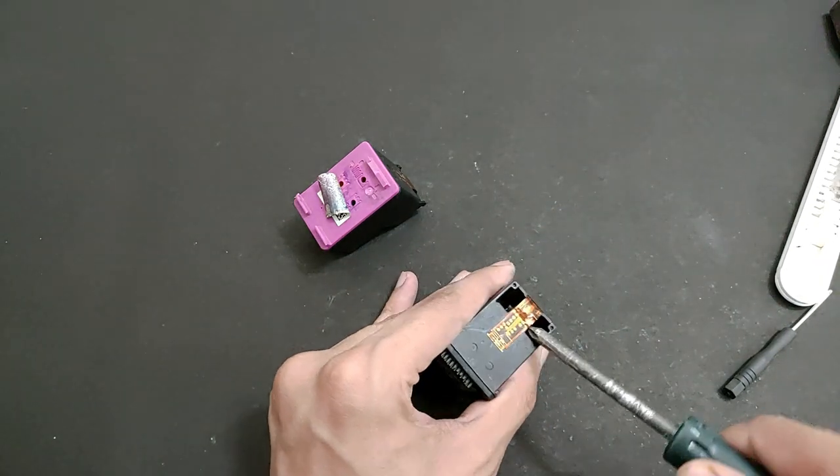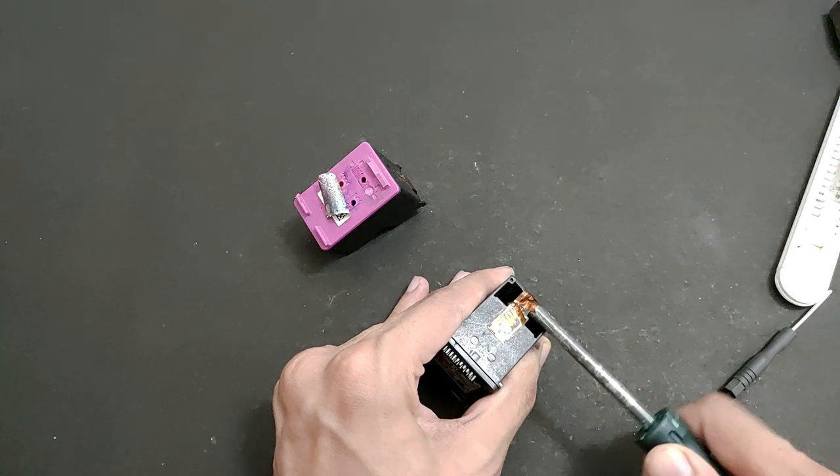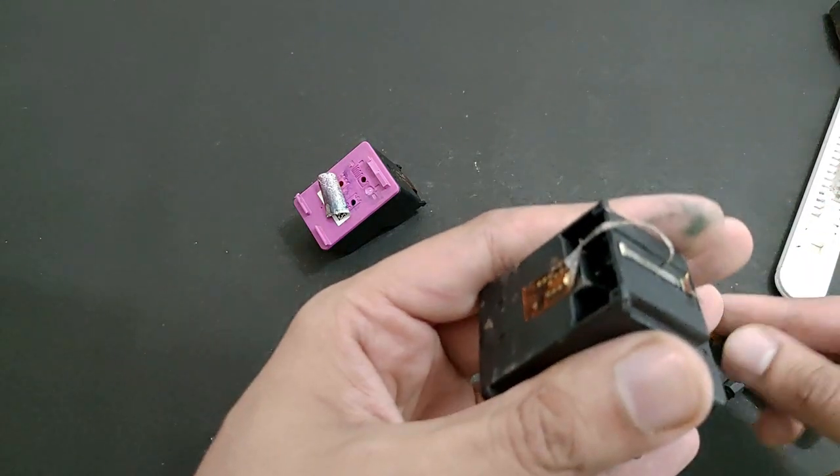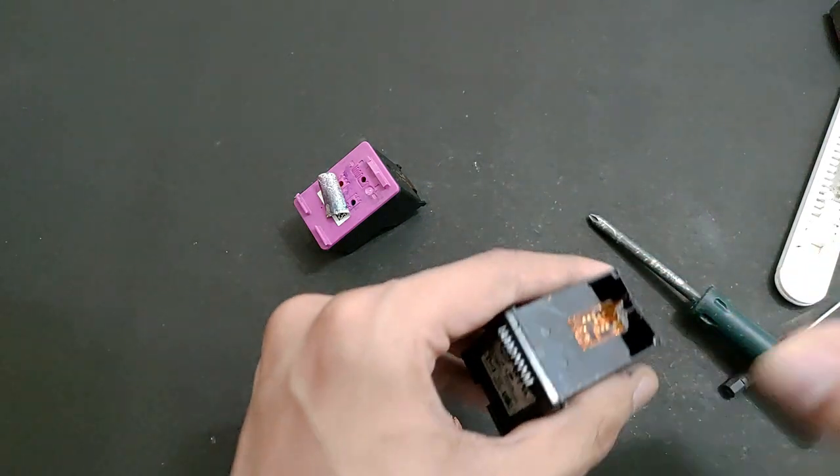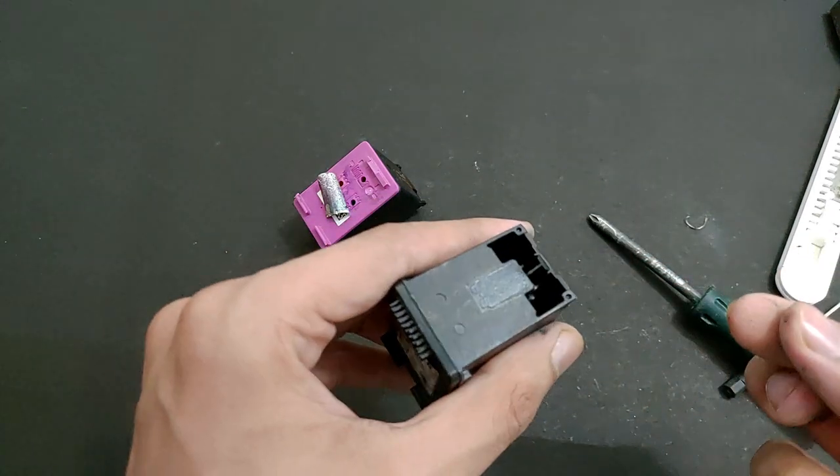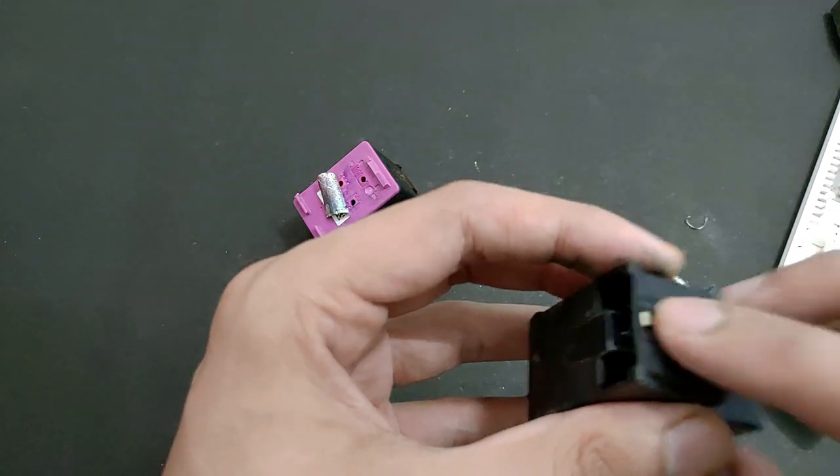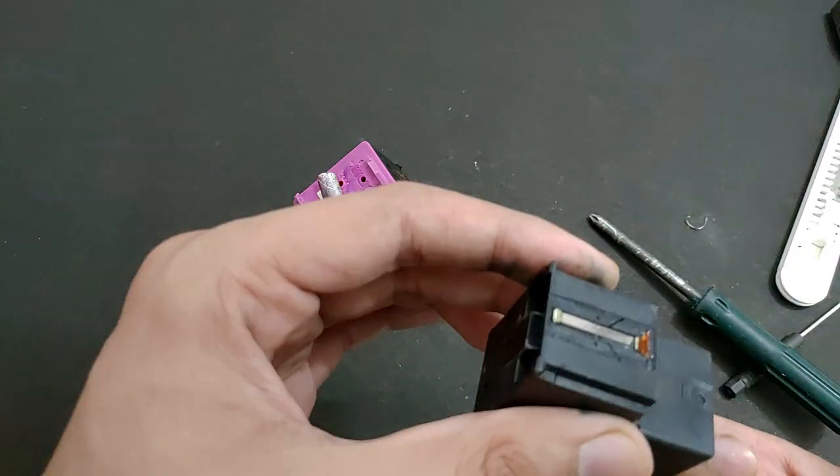As you can see right now, I am ripping apart this gold copper connection cable. It transfers all the information from printer to be carried out. And this shiny rectangular thing is the nozzle which sprays the ink on the paper.